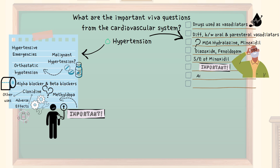And lastly but most importantly, what are ACE inhibitors? Enlist the drugs and describe their mechanism of action. What are the various adverse effects and contraindications of ACE inhibitors? Why are ACE inhibitors notorious for causing dry cough? Which alternative drug should be given in case the patient experiences dry cough?